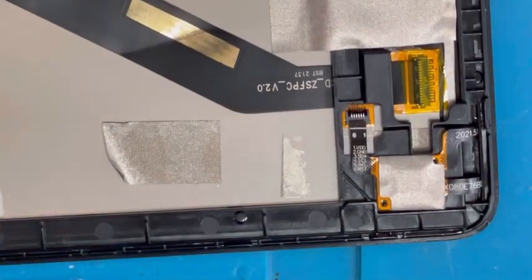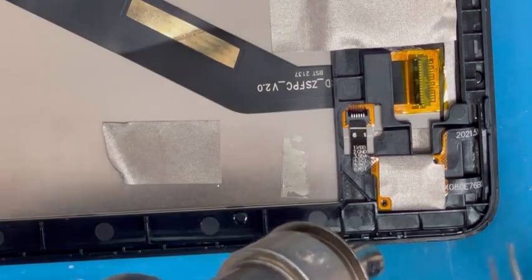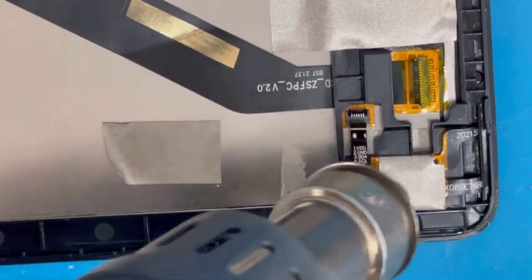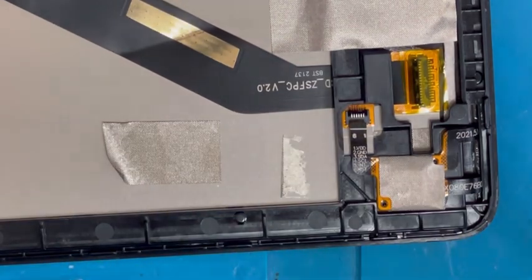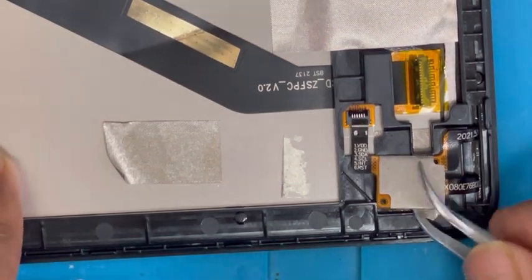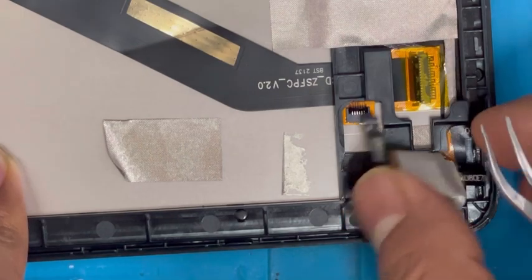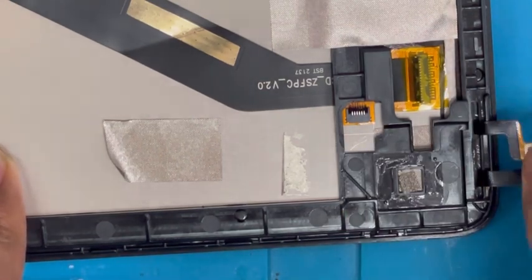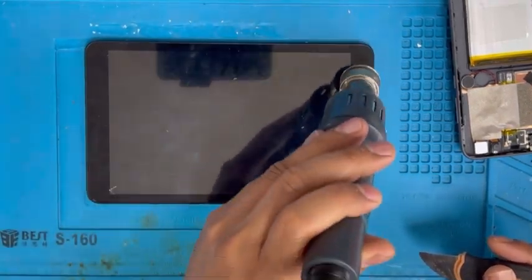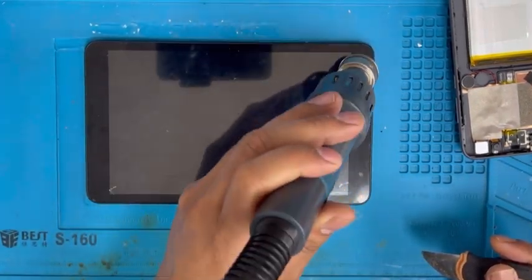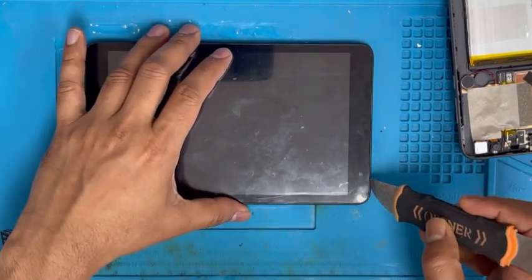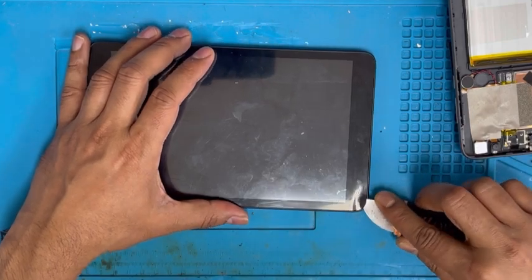Put some heat so it's easy to remove. It's removed. Now we're going to remove that glass. Put some heat. I'm going to start with this corner.